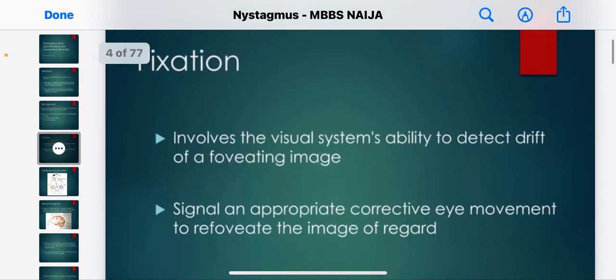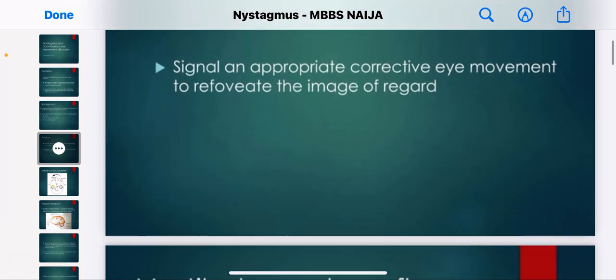Let's talk about fixation. This involves the visual system's ability to detect drift of a foveating image and signal an appropriate corrective eye movement to re-foveate the image of regard. This is your ability to focus your eye on an image.